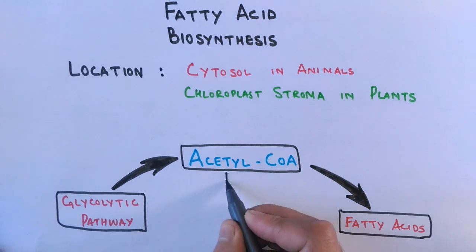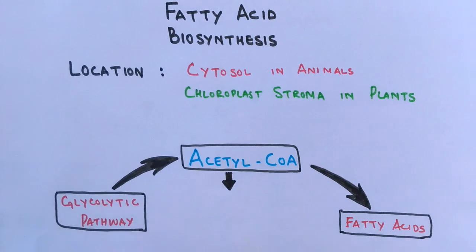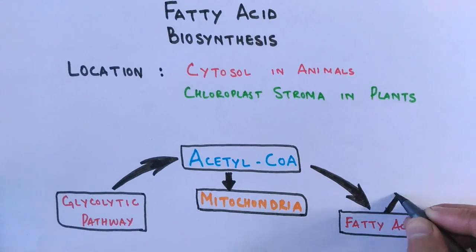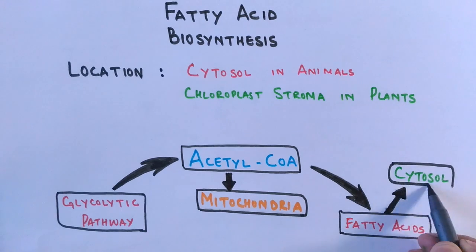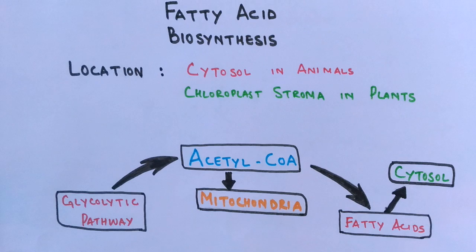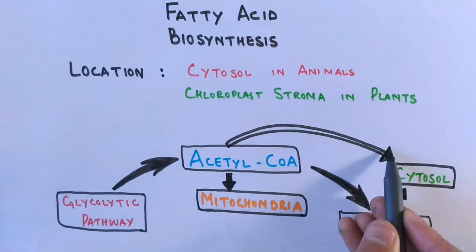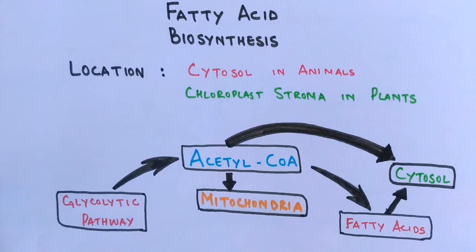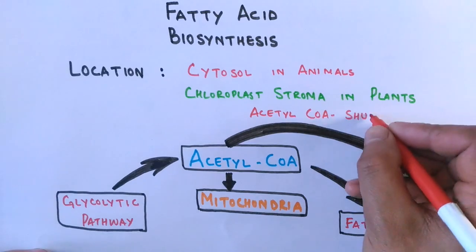There is a problem here: acetyl coenzyme A is present in the mitochondria, but fatty acid synthesis occurs in the cytosol. They are at different locations in the cell, separated by the mitochondrial membrane. So there must be a mechanism to transport this acetyl coenzyme A into the cytosol so that fatty acid biosynthesis can be driven.